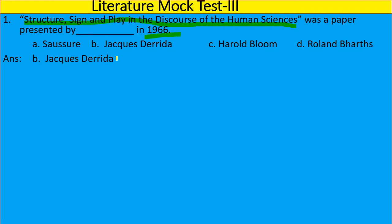Question number 2: 'Fern Hill' is a poem written by — Dylan Thomas, Sylvia Plath, Thomas Gunn, or Ted Hughes? This is one of the most important contemporary English poems. The right answer is Dylan Thomas.